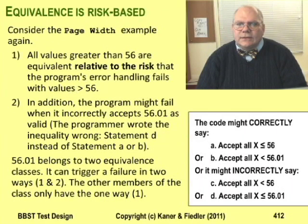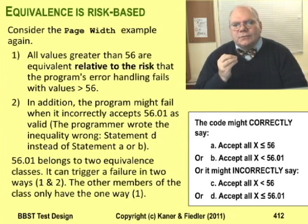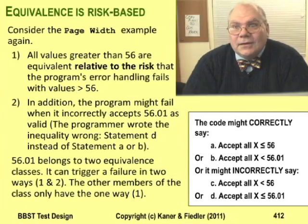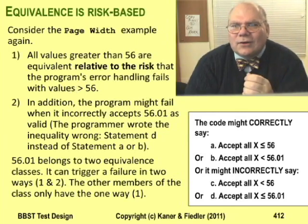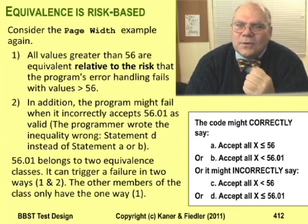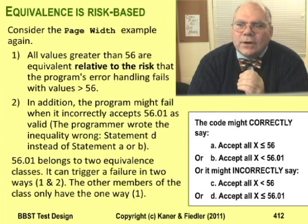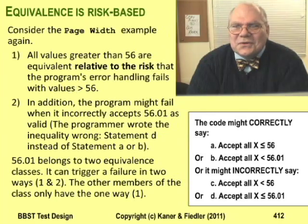It's time to take a closer look at the idea of equivalence. Now, we've already tested the page width field, but let's pretend that we hadn't run the tests yet — let's pretend we just knew that the maximum slide width was supposed to be 56 inches. Let's start by considering values that are too big. The program can have a bug in its error handling code — it could fail when it tries to cope with a value bigger than 56, maybe printing the wrong error message. Relative to that risk, every value bigger than 56 is equivalent. All of them will trigger the same failure, or none of them will. Every value bigger than 56 is part of the same equivalence class. But that isn't the only risk.